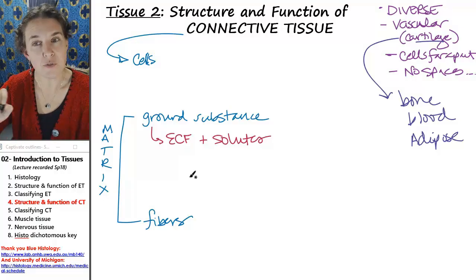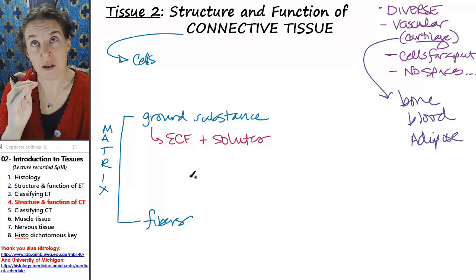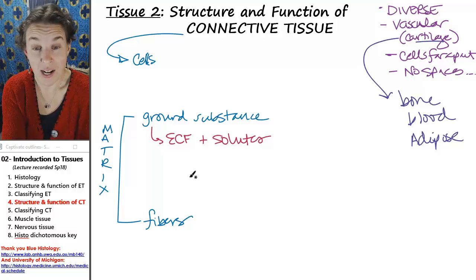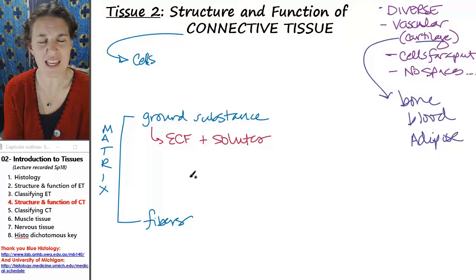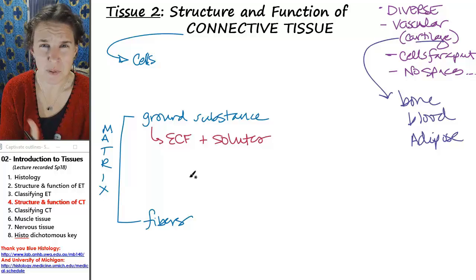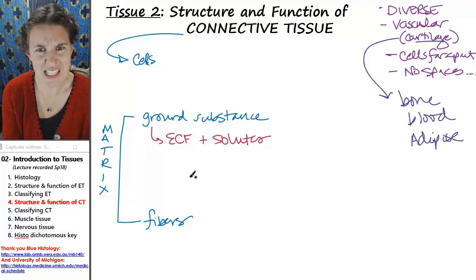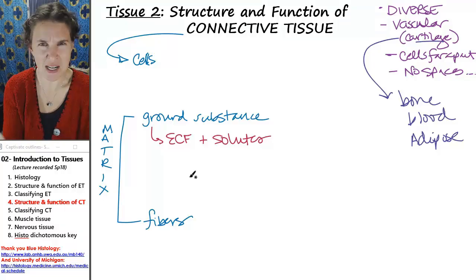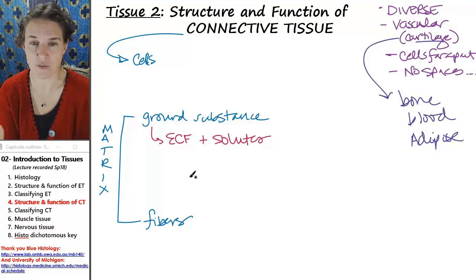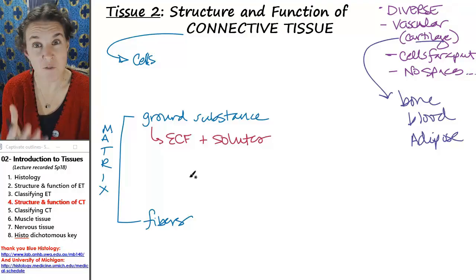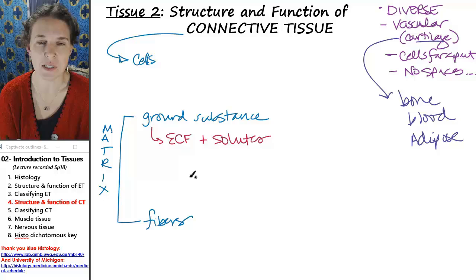In that fluid, different connective tissues are going to have different things in their extracellular fluid. Think about blood. The blood plasma is the ground substance, and blood plasma, it's mostly water. There's proteins in there, and there's salts and all sorts of good stuff, but it's a very fluid ground substance.